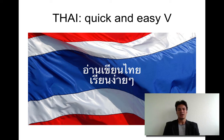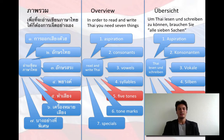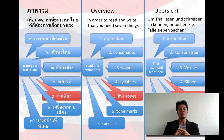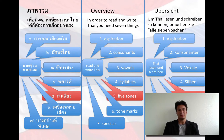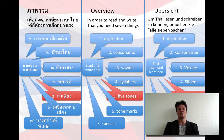Hello and welcome to Thai Quick & Easy Lesson 5. So far we have had lessons about aspiration, consonants, vowels, and syllables. Today we are going to have a look at the five tones in the Thai language.